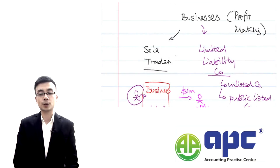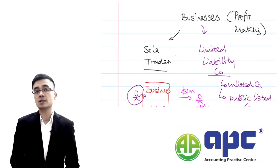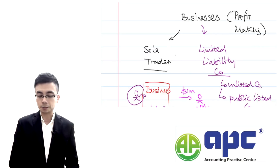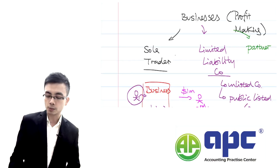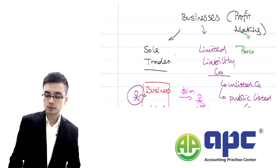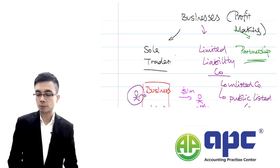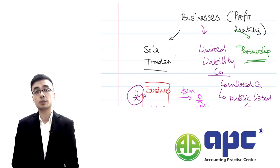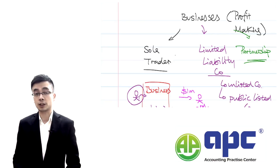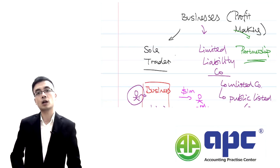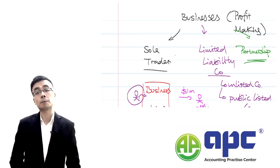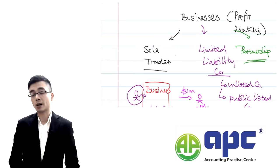Maybe you're a professional and you want to start a business. For example, if you're working as a lawyer and you want to open up a firm to provide legal services, then a partnership is probably more appropriate for that type of business. Or for example, if you want to start an accountancy practice firm with your friend — perhaps ACCA qualified or CIMA qualified accountants — yes, you can partner with your friends to open up that legal practice firm.